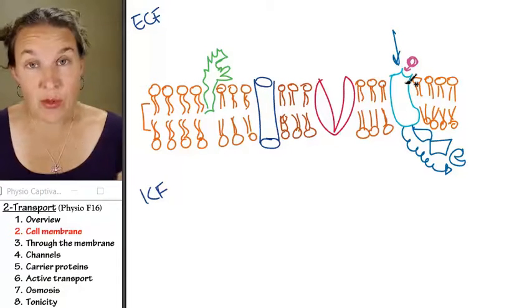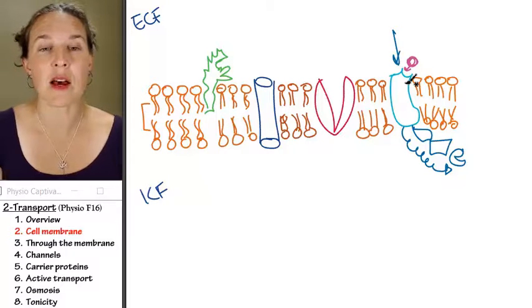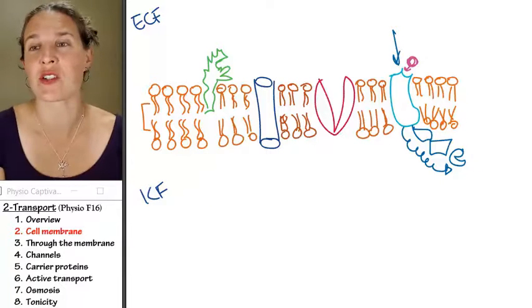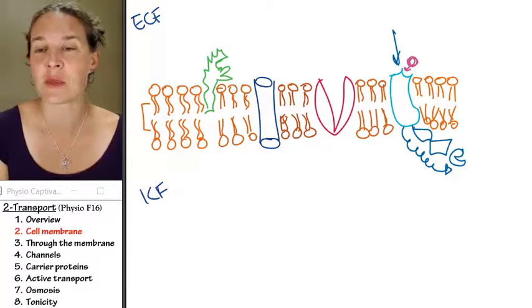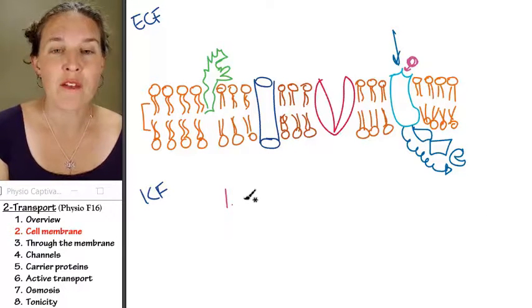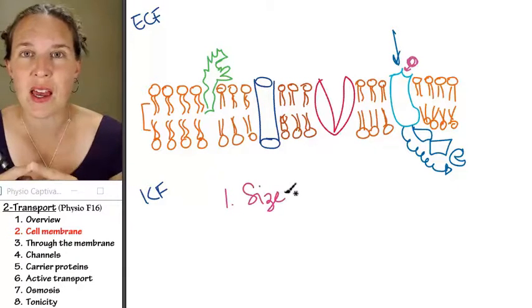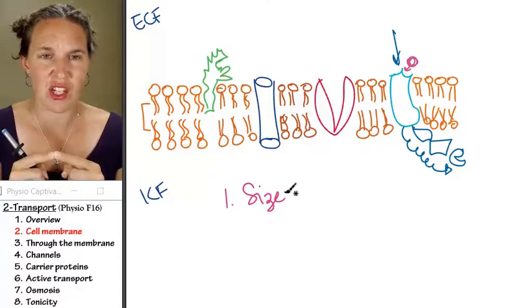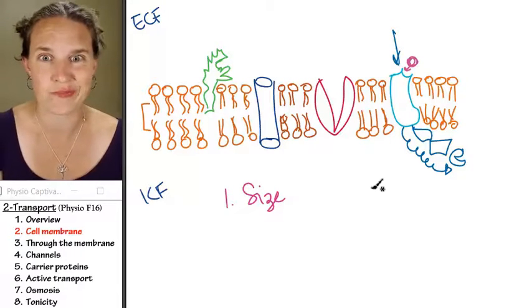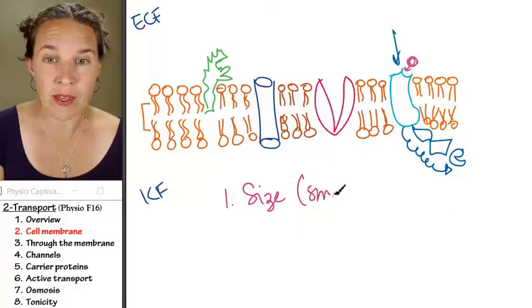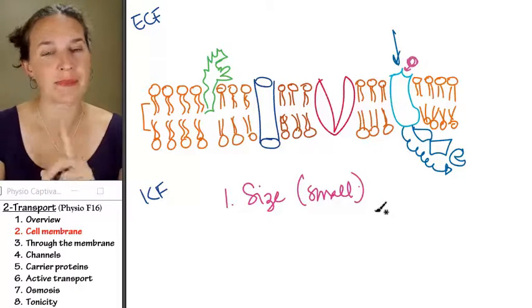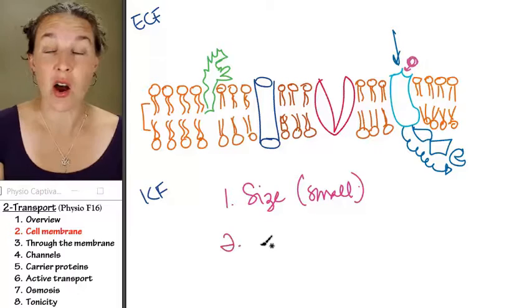Now, some things can get through and some things can't. Let's make a list. There's two factors that basically come into play if you're going to decide whether or not a substance can get through. First of all, you got to look at size. If you think about this, do you think big things can get through easily or small things? Small things are more likely to be able to get through the cell membrane.